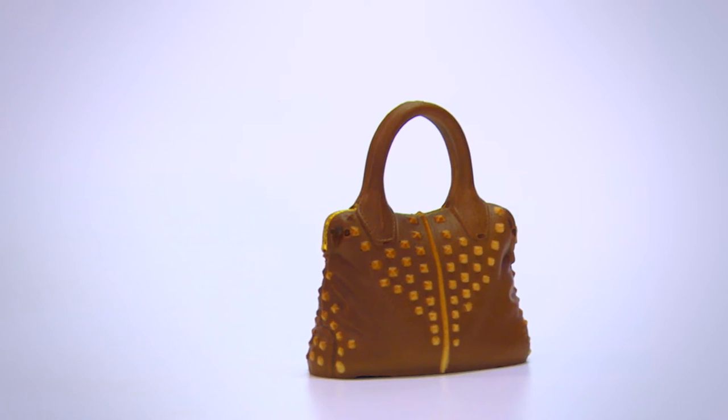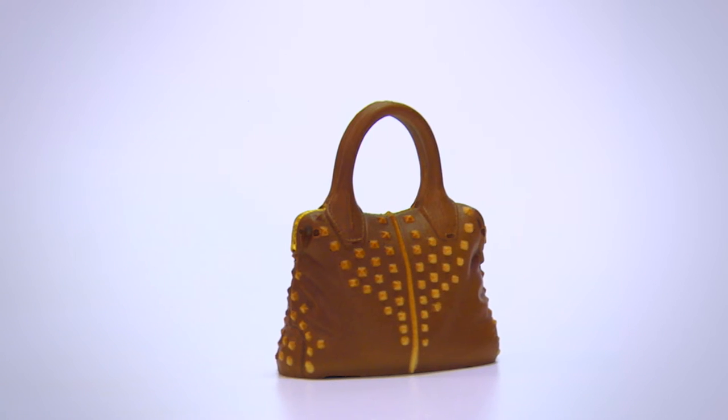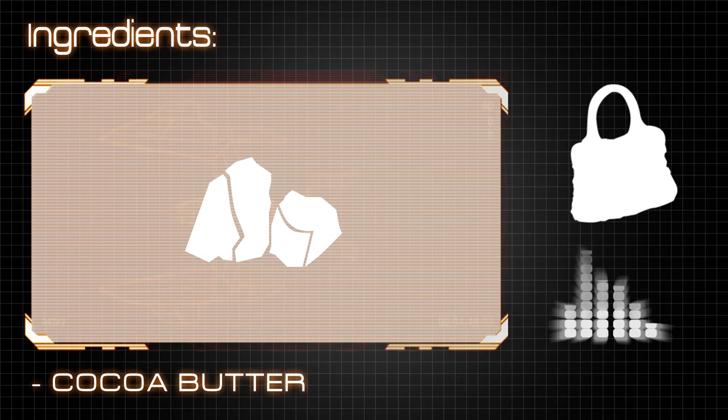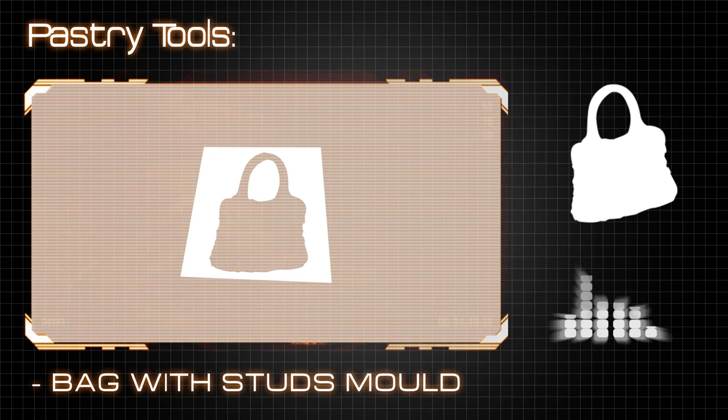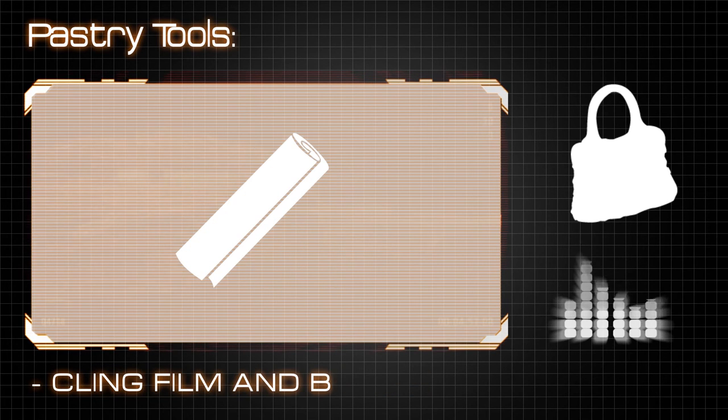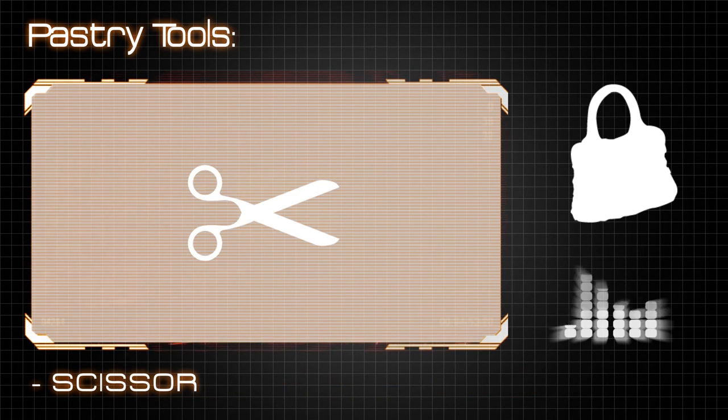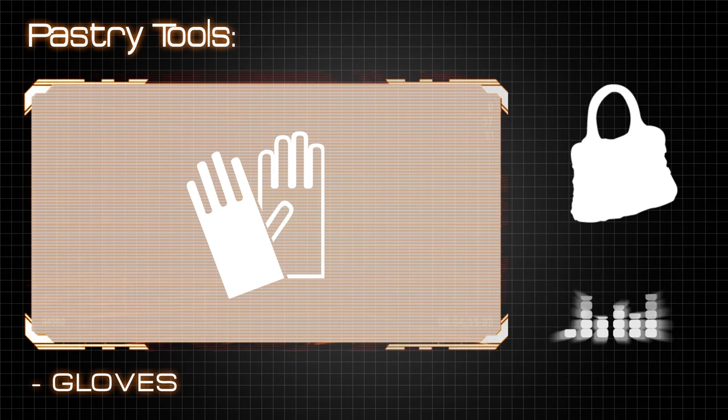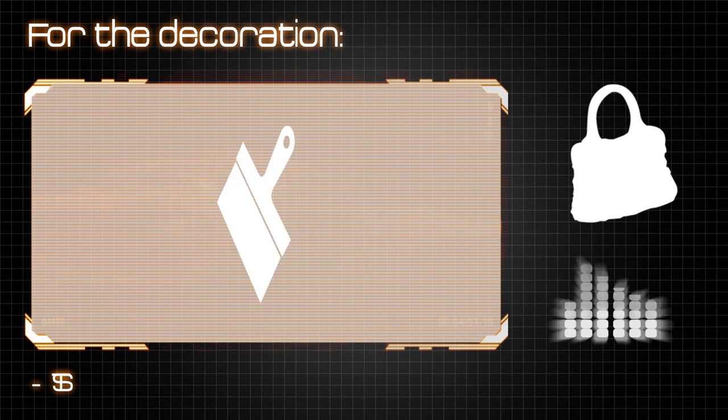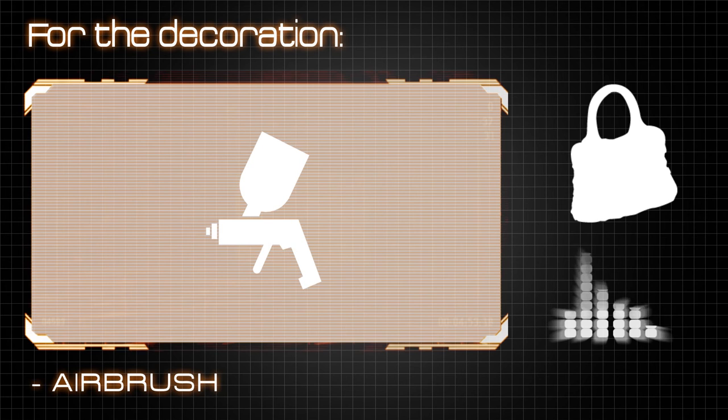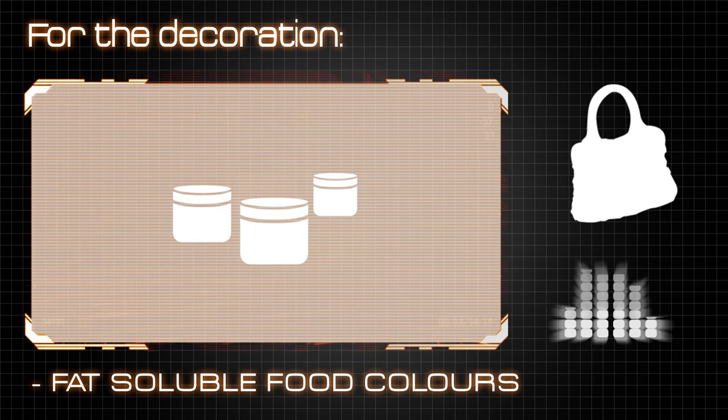In order to create this object we used: ingredients: white chocolate, milk chocolate, cocoa butter. Bag with studs mold, plexiglass supports, rubber bands, cling film and baking paper, scissors, piping bag, gloves, thermometer, spatula, paintbrush, airbrush, fat-soluble food color.